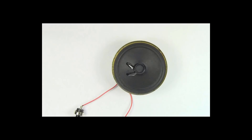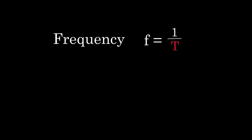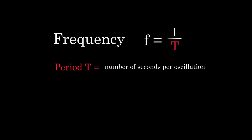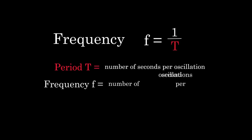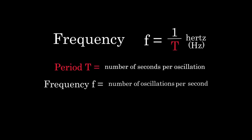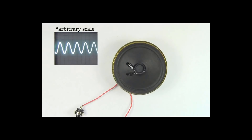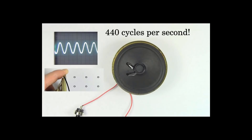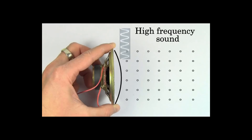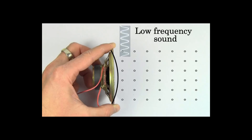An idea intimately related to the period is called the frequency. Frequency is defined to be one over the period. So since the period is the number of seconds per oscillation, the frequency is the number of oscillations per second. Frequency has units of one over seconds, and we call one over a second a hertz. Typical sounds have frequencies in the hundreds or even thousands of hertz. For instance, this A note is causing air to oscillate back and forth 440 times per second, so the frequency of this A note is 440 hertz. Higher notes have higher frequencies, and lower notes have lower frequencies.